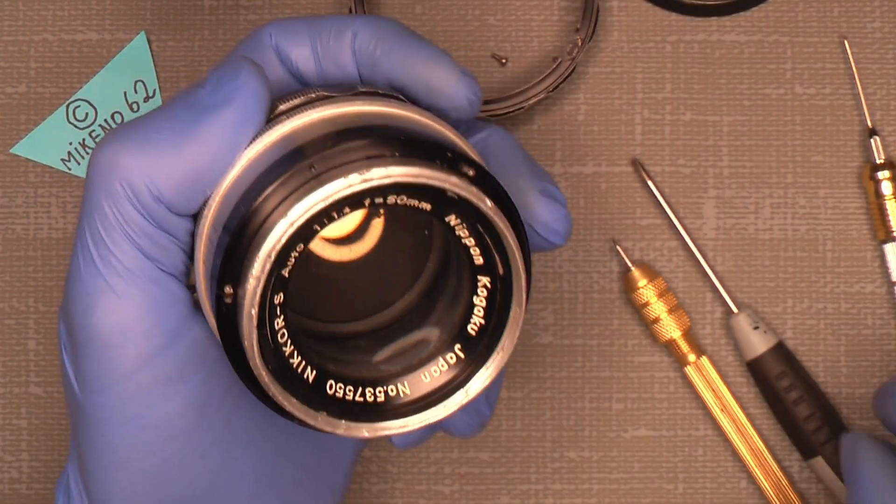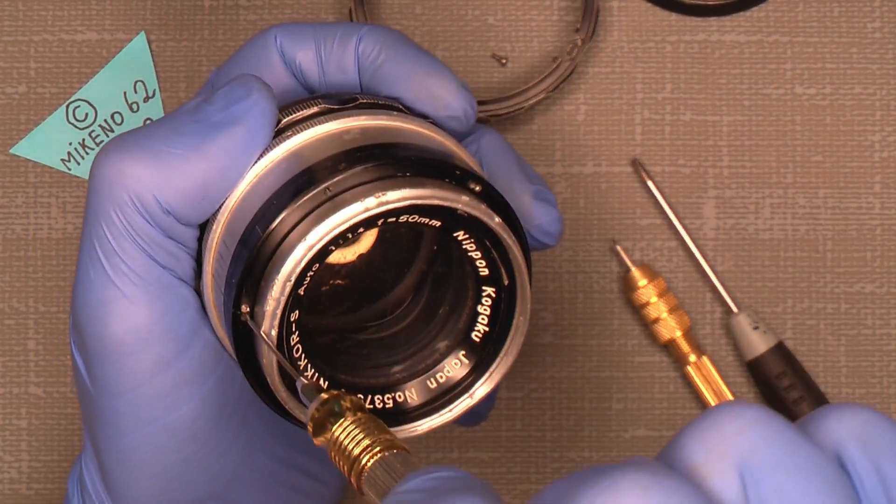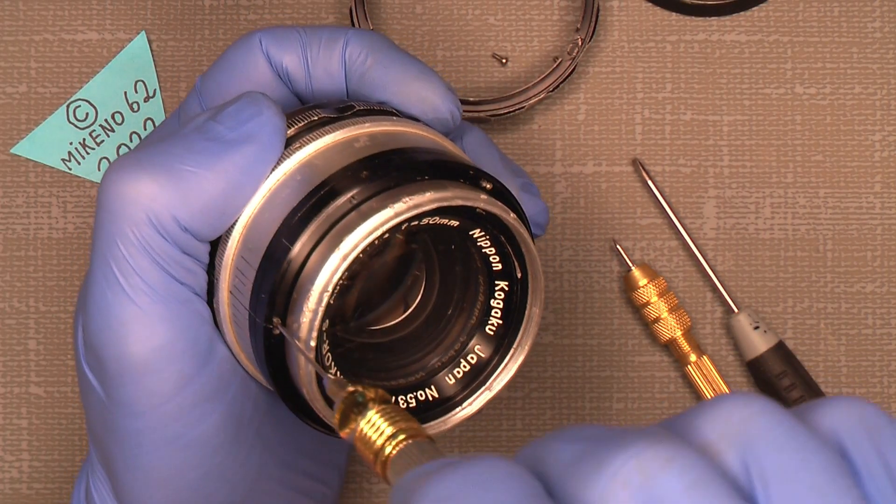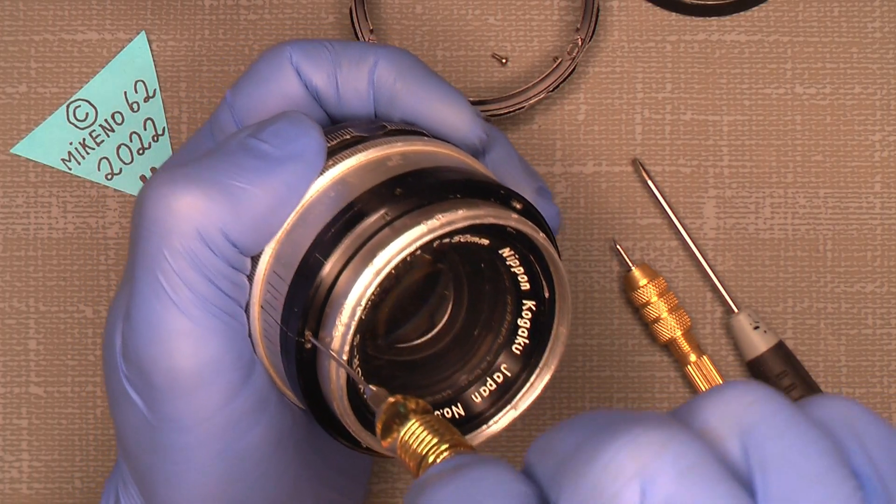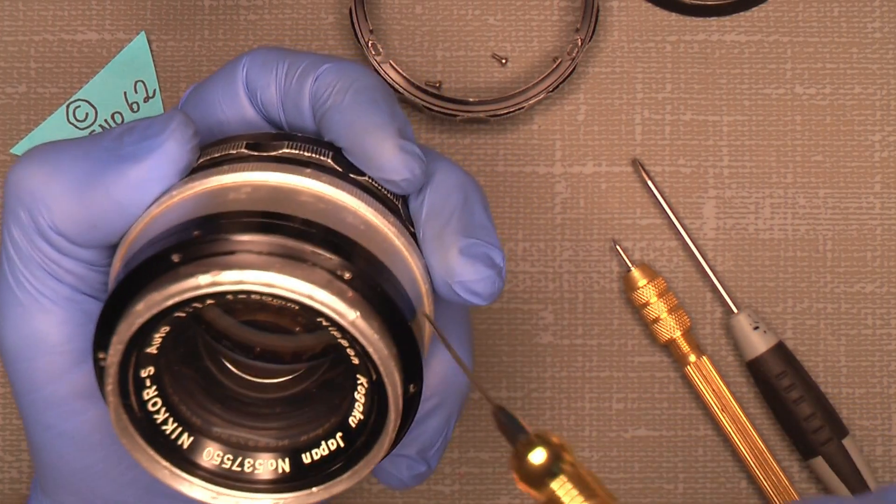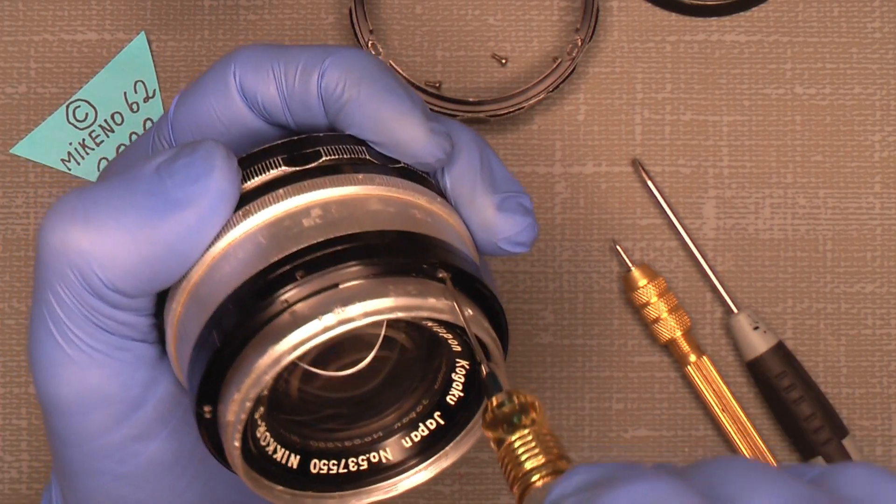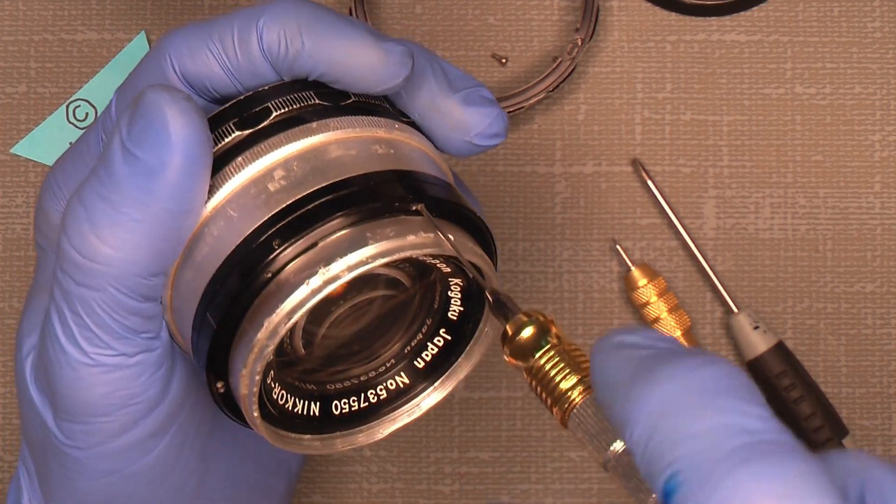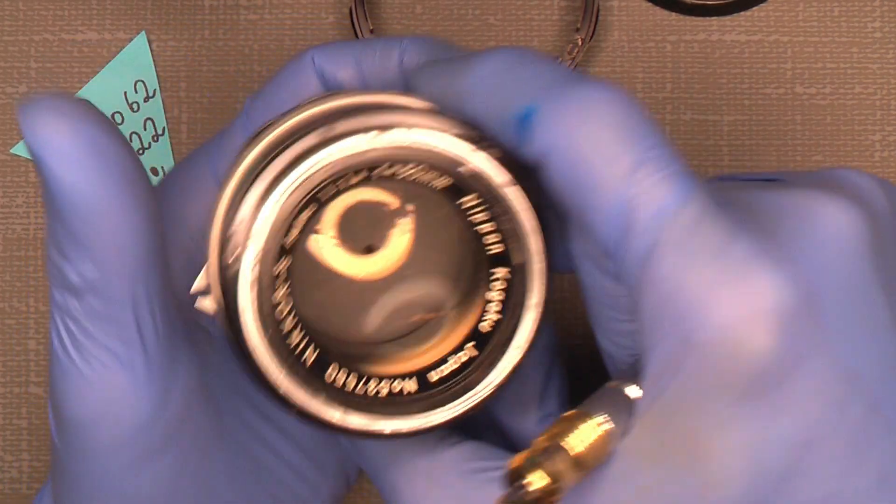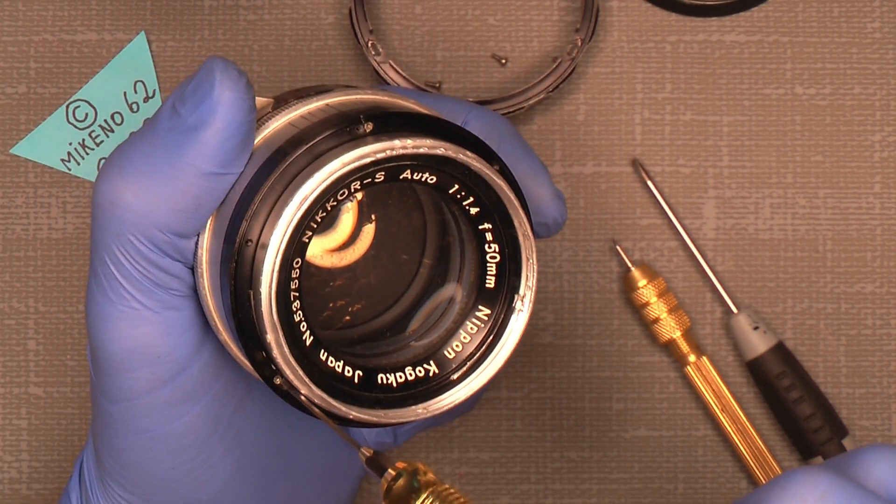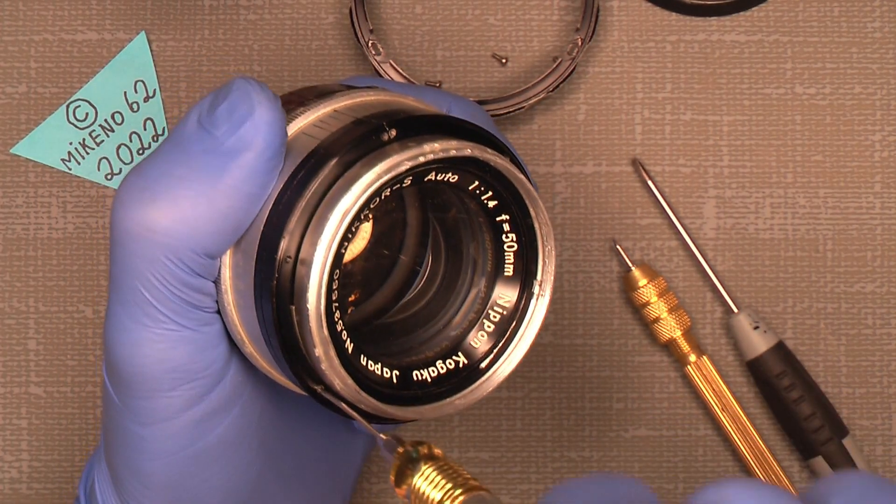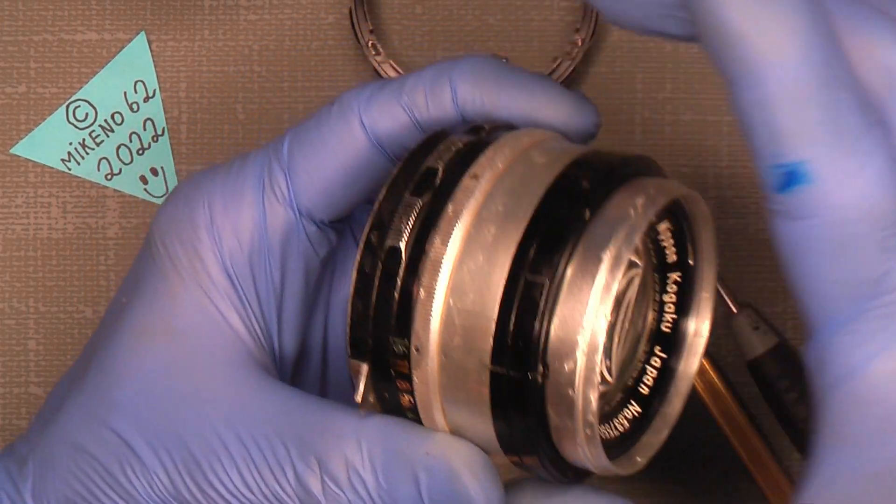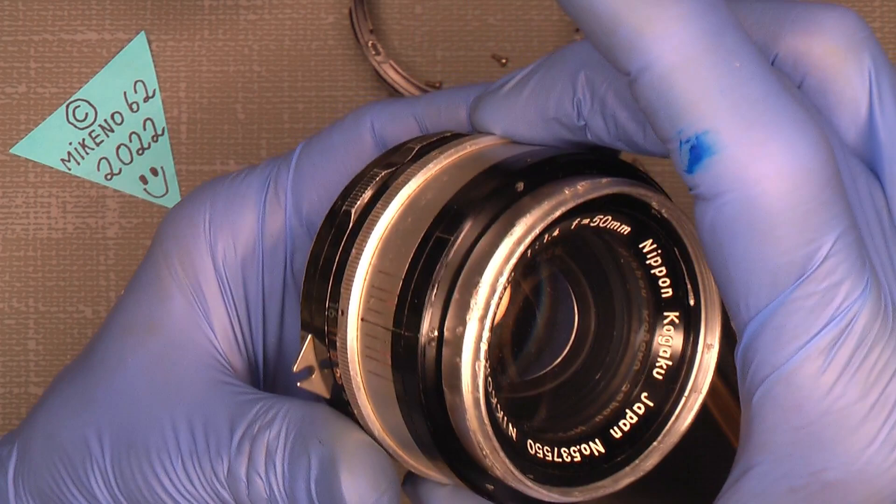Now since we have done that, I can simply dig into my one millimeter flathead screwdriver and loosen it a few turns. That's enough. And the second one. Don't unscrew them fully, you will probably miss it. And then the last one. So now they are loose, and the ring is actually also loose.